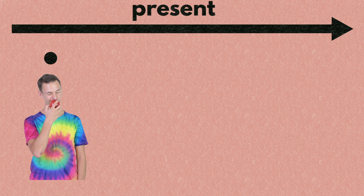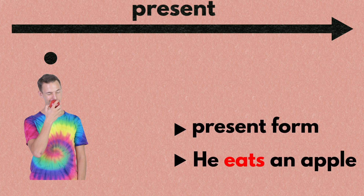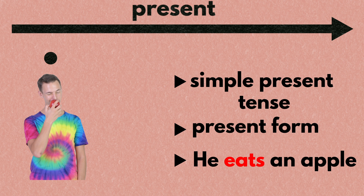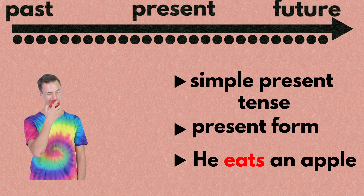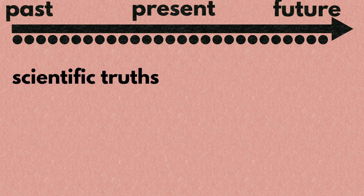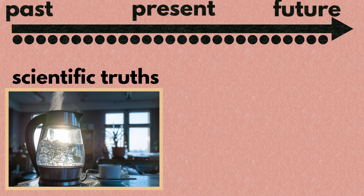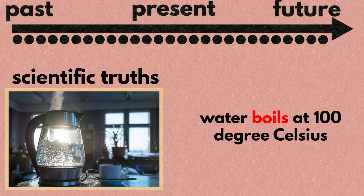Now let's move on to the tenses in the present time zone. If something happens in the present and there's nothing special about it, leave the verb in its present form, as in he eats an apple. This tense is called the simple present tense. You also use the simple present tense when there's no point in choosing a tense — if something held true in the past, holds true now, and will always hold true in the future. For instance, water boils at a hundred degrees Celsius.